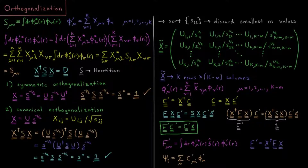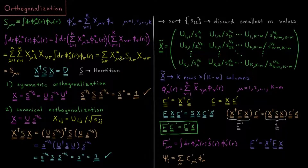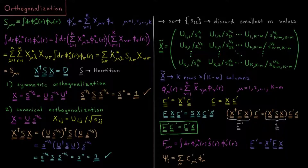Then we have the integral on the inside of phi_lambda* phi_sigma. This is also equal to the double sum over lambda and sigma of x*_mu_lambda, S_lambda_sigma, x_nu_sigma, which is also equal to S_mu_nu or S_mu'_nu'. So if we choose the X matrix such that we end up with an identity matrix, or at the very least a diagonal matrix, then this shows that X†SX equals some diagonal matrix.